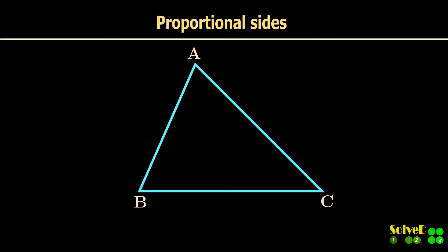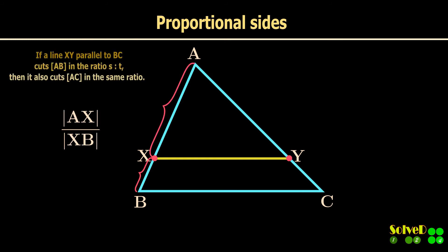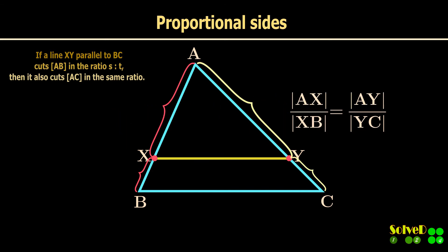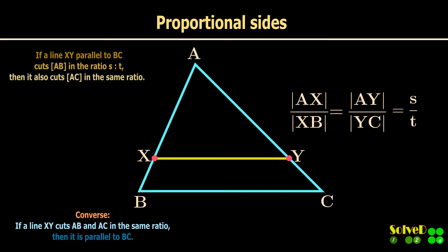Consider a triangle ABC. If a line XY is parallel to BC and cuts AB in the ratio ST, then it also cuts AC in the same ratio. Conversely, if a line cuts the sides AB and AC in the same ratio, then it is parallel to BC.